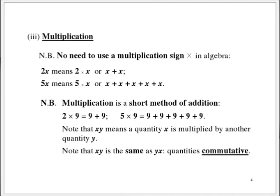Multiplication is really a short method of addition. 2 times 9 is equal to 9 add 9. 5 times 9 is 9 added 5 times over. Note that xy means a quantity x is multiplied by another quantity y. Note that xy is the same as yx, so quantities are commutative under multiplication — they can be changed around.